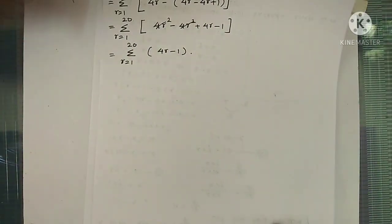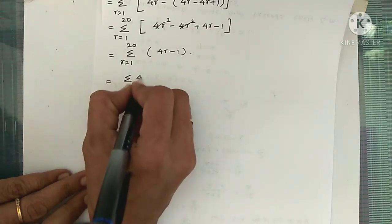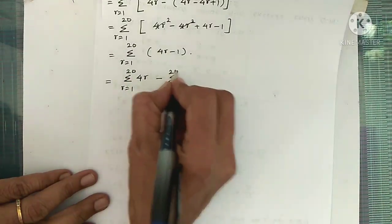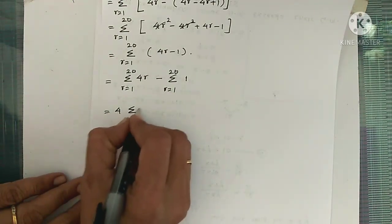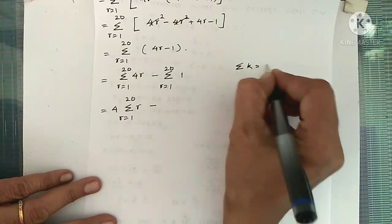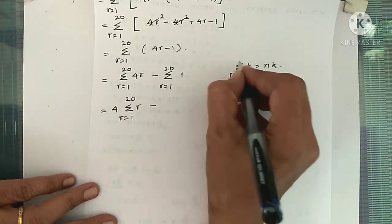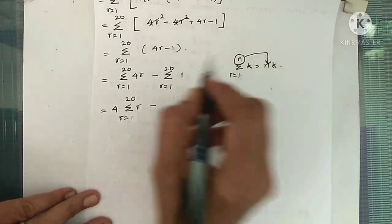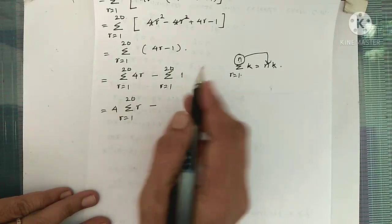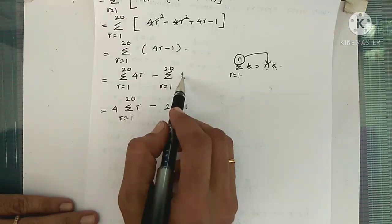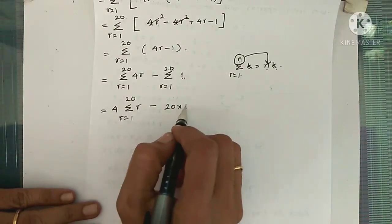By sigma notation properties: summation of 4r minus summation of 1, from r=1 to 20. This gives 4 summation r minus 20×1 = 4 summation r minus 20.